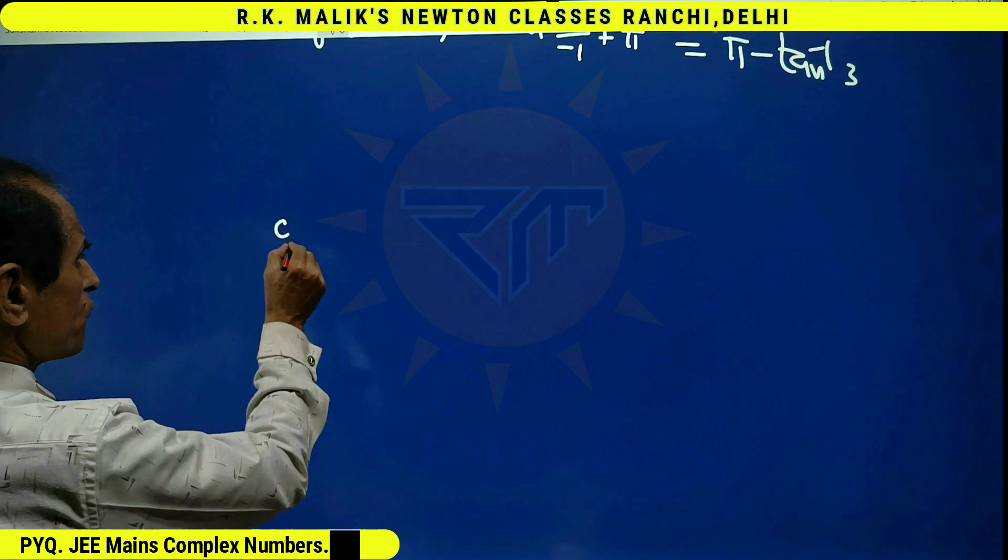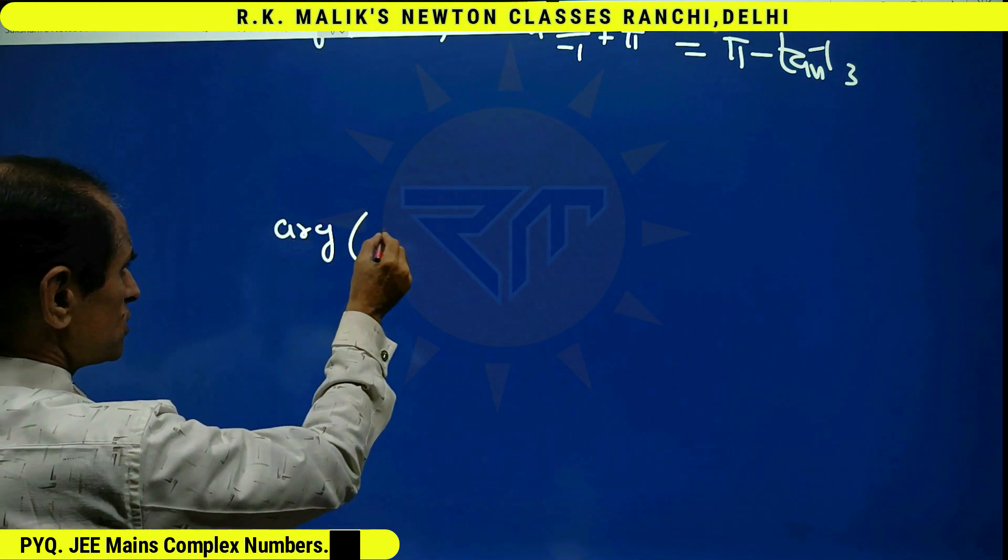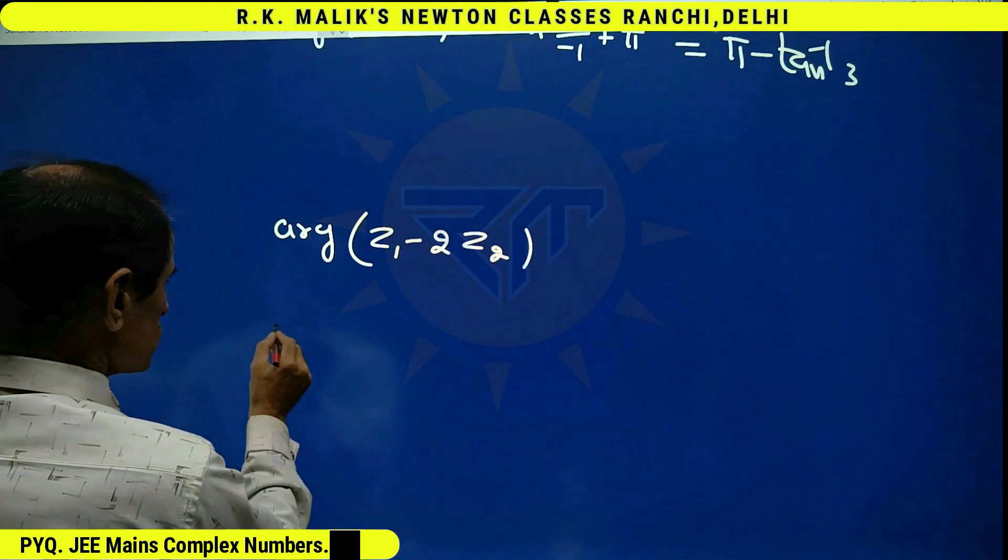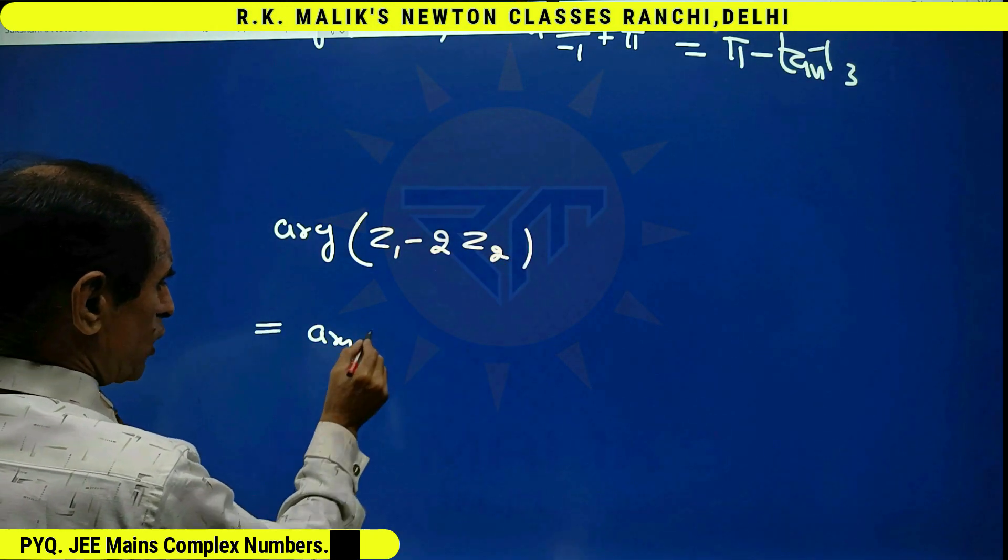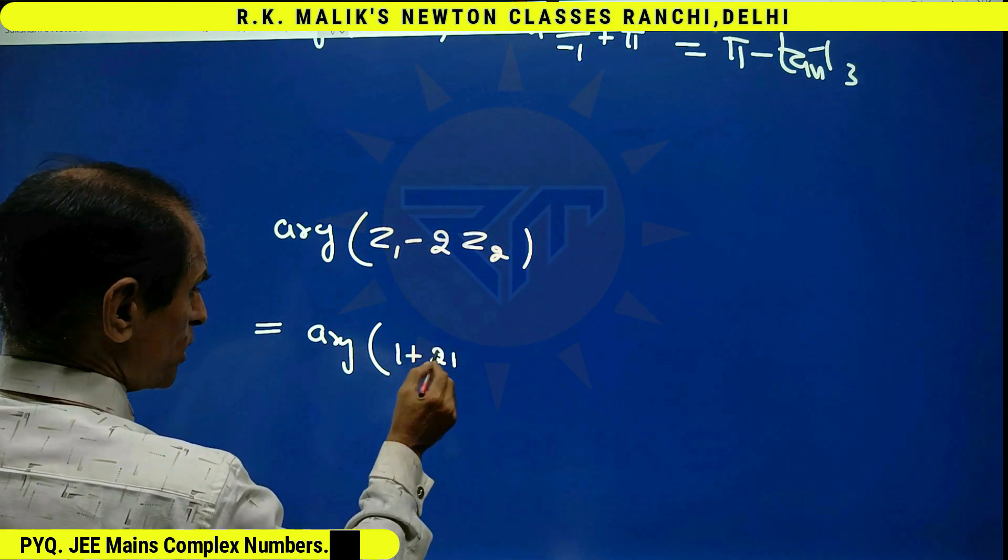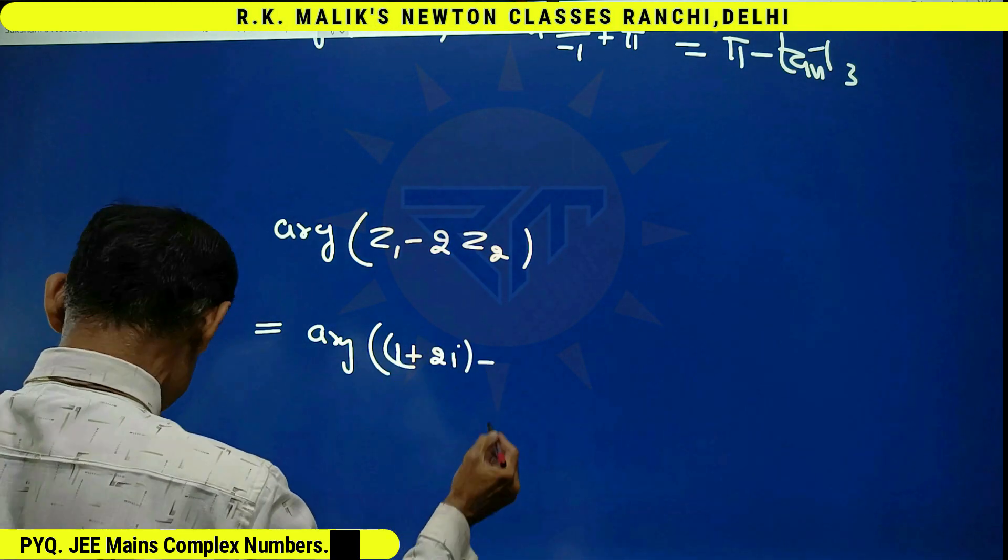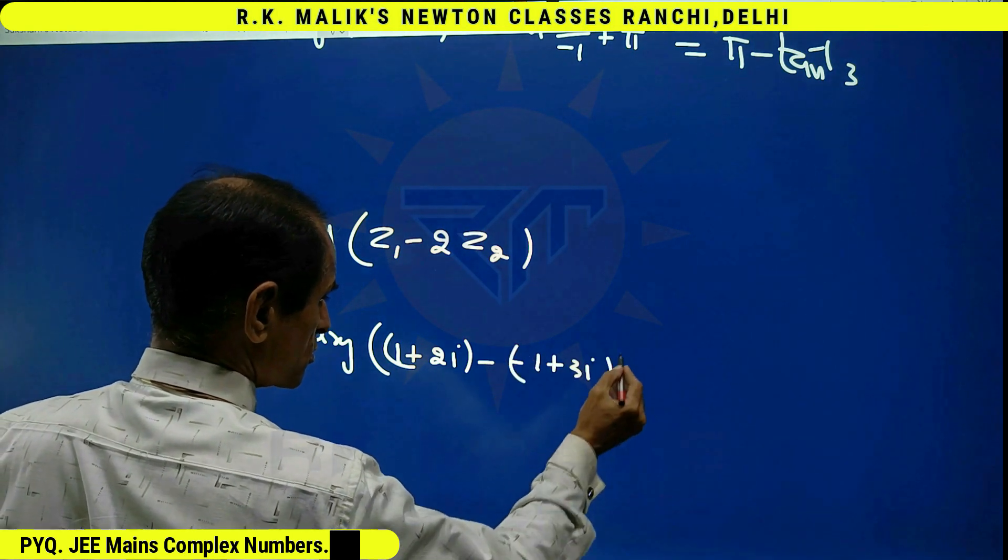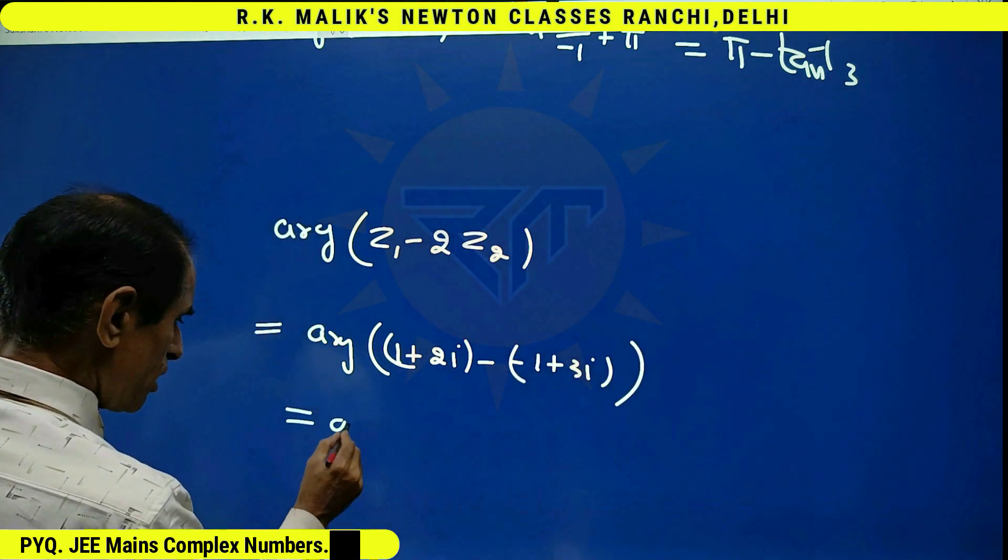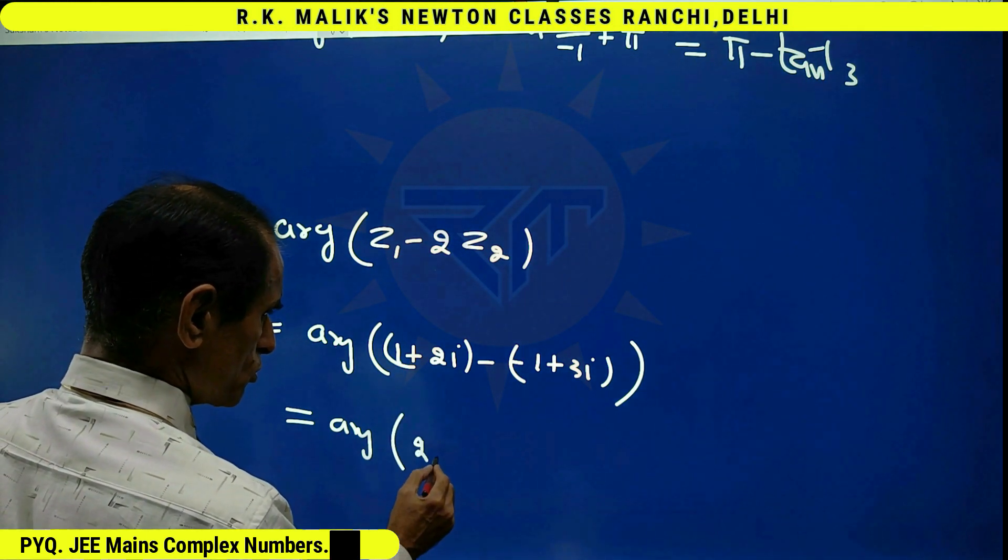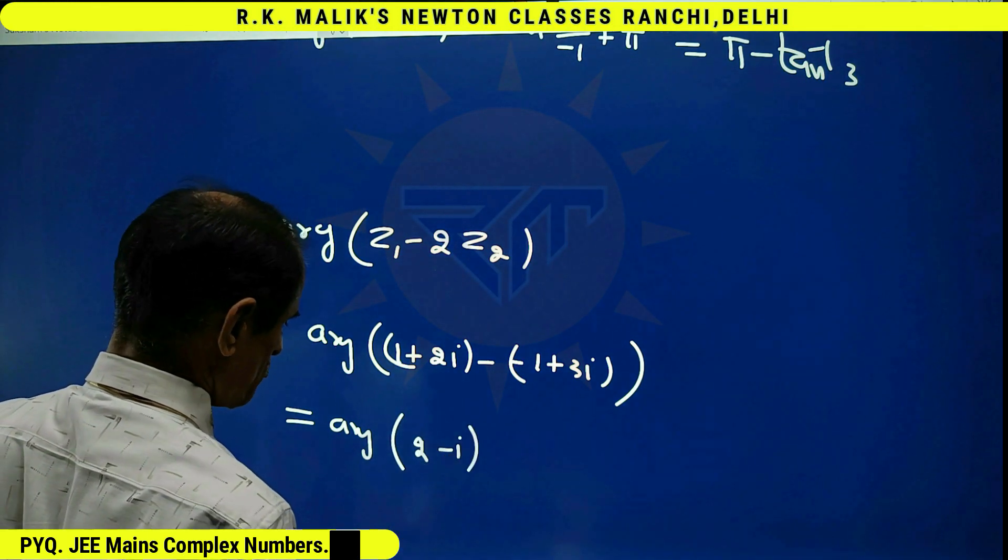Now, we have to find the value of argument of z1 minus 2z2. That is, argument of (1 plus 2i) minus 2 times (-1 plus 3i). That is, argument of 2 minus 2i.